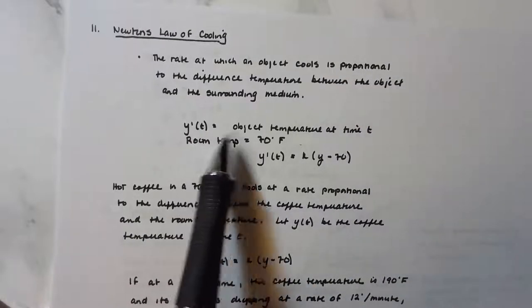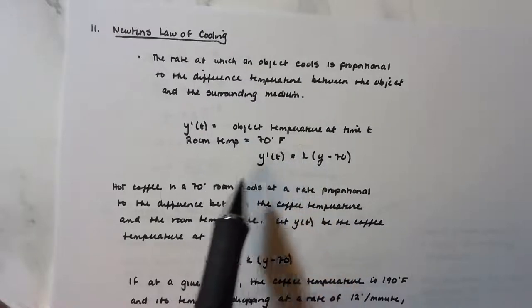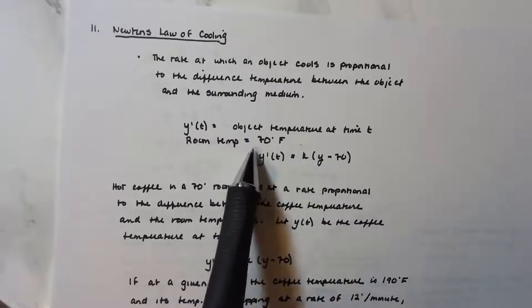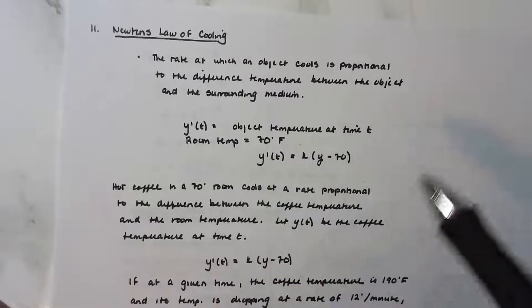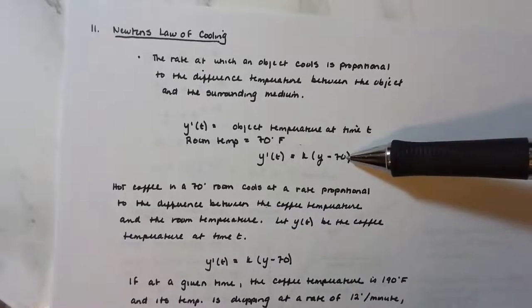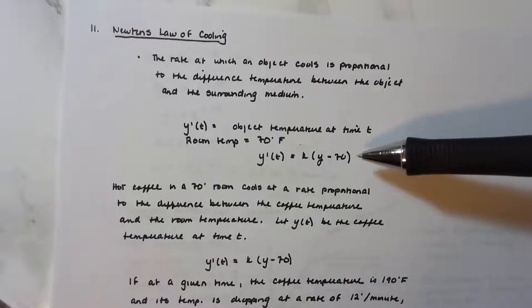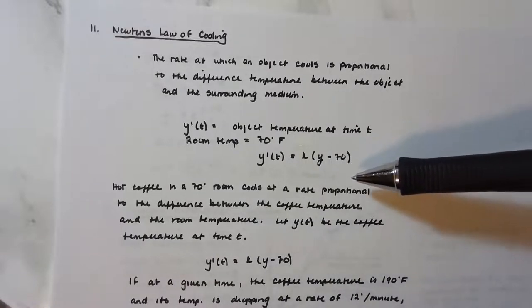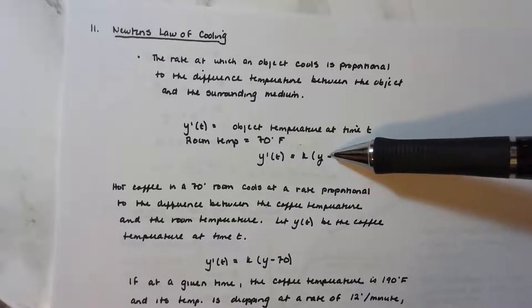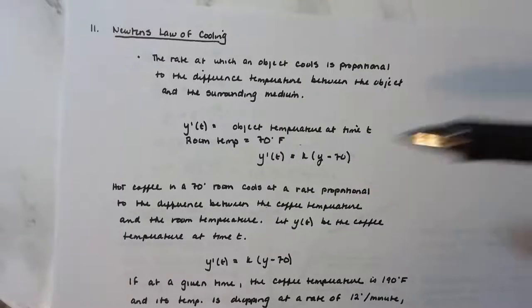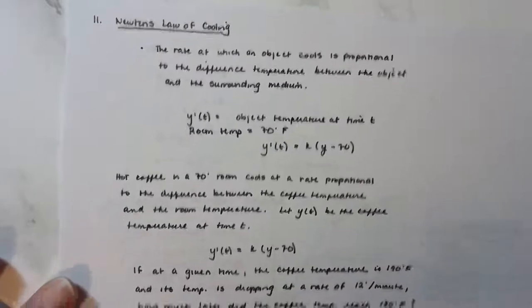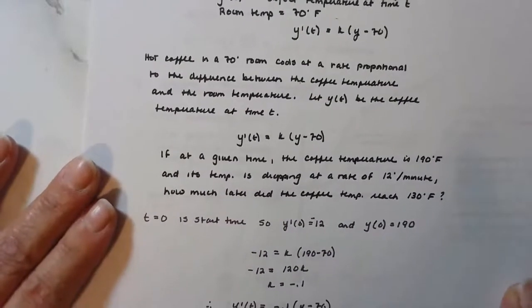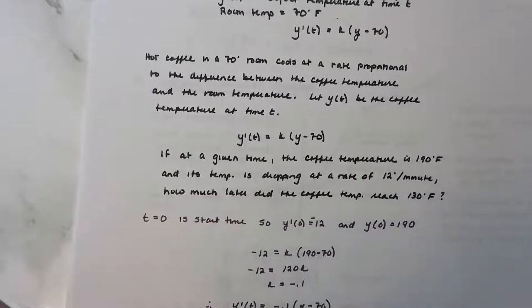y'(t) represents the object's temperature at time t. Generally room temperature is 70 degrees, so you'll often see that in the differential equation: dy/dt = k(y − 70). This value can change depending on the situation. Here's an example: hot coffee in a 70-degree room cools at a rate proportional to the difference between the coffee temperature and the room temperature.